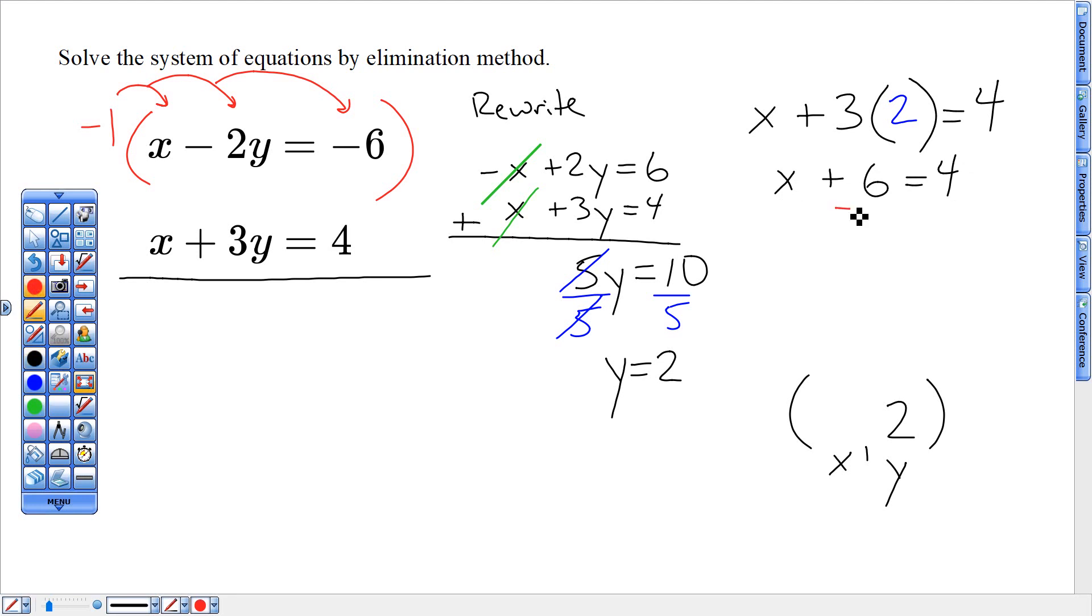And solve that for x gives me six right there. First step I'm going to take away six on both sides to get that x coordinate which is negative two.